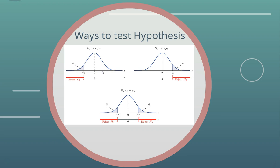You accept or reject the null hypothesis based on the confidence level you set — 90%, 95%, or 99% confidence. Based on that confidence level, you get a rejection region. Z-statistic tables are available in textbooks and online, giving upper and lower critical values for two-tailed tests or a single directional value for one-tailed tests. If your test statistic falls in the acceptance region, you accept H₀; if it falls in the grayed-out rejection region, you do not have enough evidence to accept H₀ and accept H₁ instead.